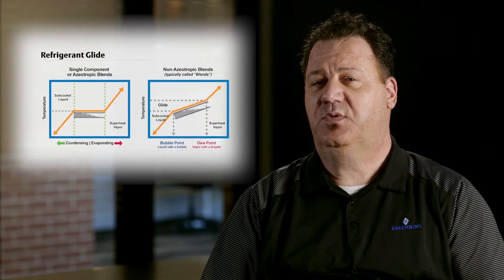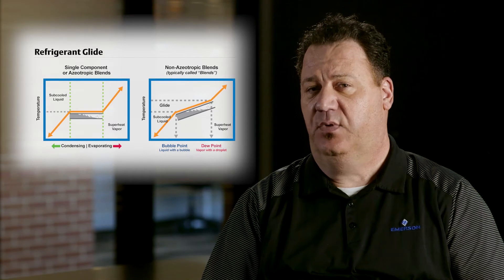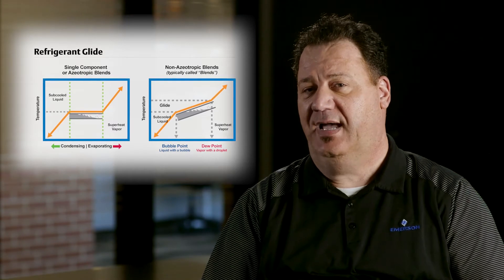When we talk about Glide, what we're really talking about is the different temperatures in the boiling point. If you have four components, one component might start out at a certain temperature, and the fourth component will end at a different boiling point. The difference between the starting point and the ending point is our Glide.